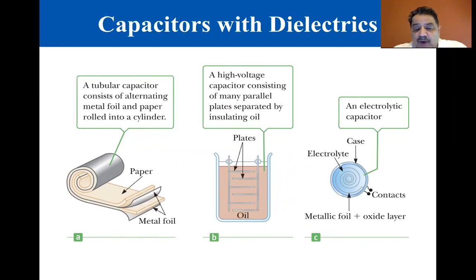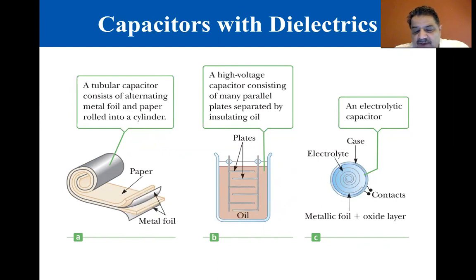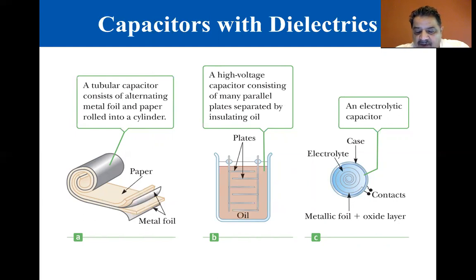Small capacitors are often constructed from ceramic materials. Variable capacitors, typically 10 picofarads to 500 picofarads, usually consist of two interwoven sets of metal plates, one fixed and the other movable, with air as the dielectric. An electrolytic capacitor, shown in the figure on the right, is often used to store large amounts of charge at relatively low voltages. It consists of a metal foil in contact with an electrolyte, a solution that conducts charge by virtue of the motion of the ions contained in it. When a voltage is applied between the foil and the electrolyte, a thin layer of metal oxide and insulator is formed on the foil, and this layer serves as the dielectric. Enormous capacitances can be obtained because the dielectric layer is very thin.